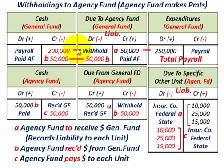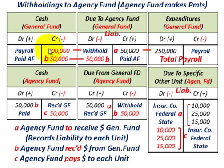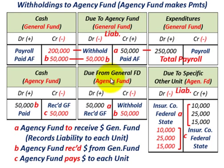In the general fund, they debit expenditures for $250,000 — the total payroll including salaries, wages, and withholdings. The actual cash payroll payments made were $200,000, so they credit cash for $200,000. They set up a liability titled 'due to the agency fund' because the agency fund is going to handle the payroll withholdings — insurance company $10,000, federal withholding $25,000, state withholding $15,000 — crediting 'due to the agency fund' for $50,000.